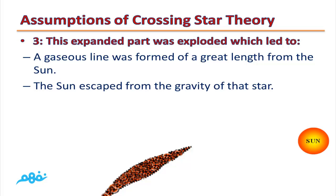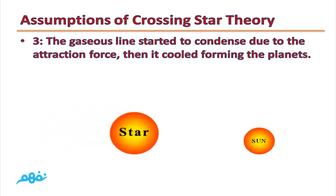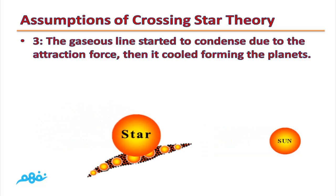The sun escaped from the gravity of the star due to the reaction of this explosion. The gaseous line started to condense due to the attraction force, then it cooled, forming the planets.